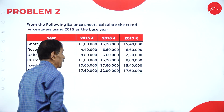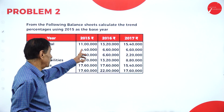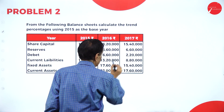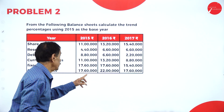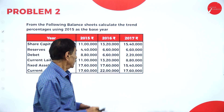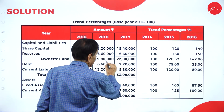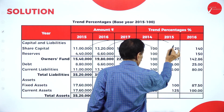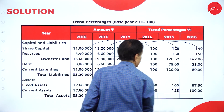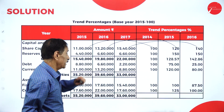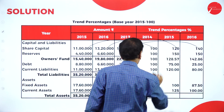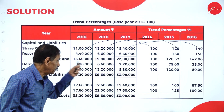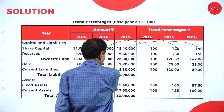From the following balance sheet, calculate the trend percentage using 2015 as the base year. Take the base year values: 11 lakh as 100, 30 lakh as 100, 20 lakh as base. Then for capital: 11 lakh equals 100, 13 lakh equals 120, 15 lakh equals 140. For the next item: 4 lakh 40 thousand divided by 11 lakh into 100; and 6 lakh 60 equals 150.